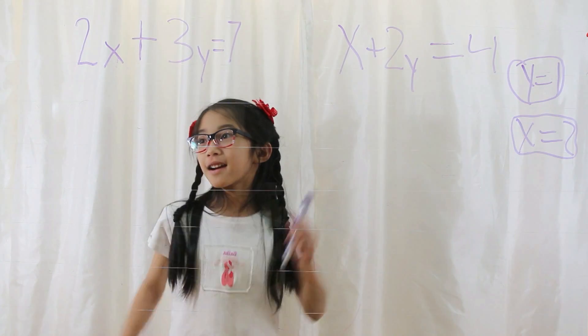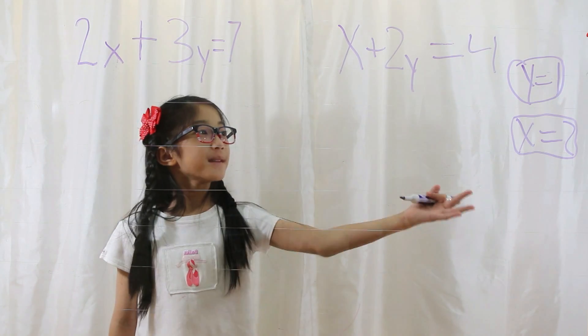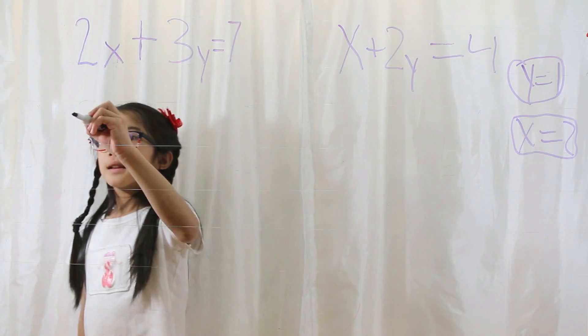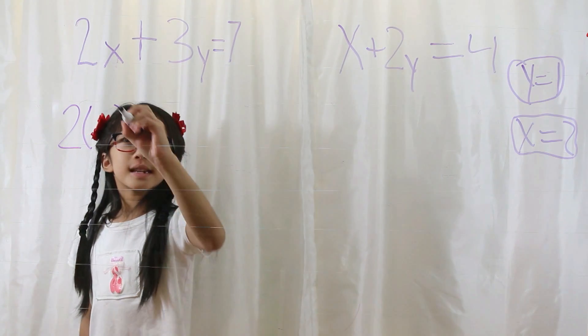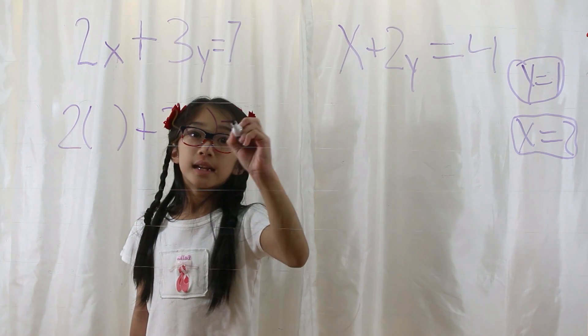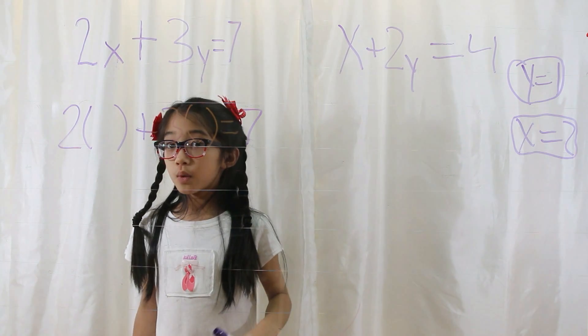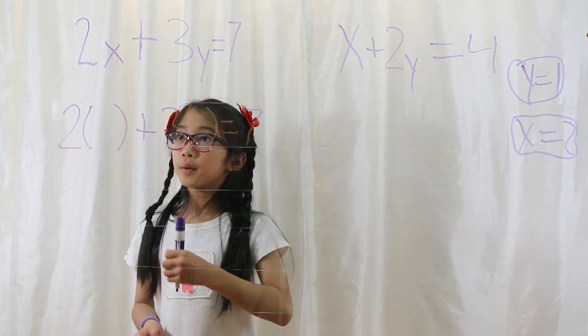Now let's check our answers. First, you copy the equation down and then plug the variables in. So, 2 parentheses plus 3 parentheses equals 7. What goes in the parentheses? Well, whatever equals that variable.